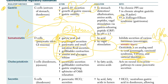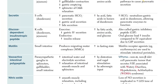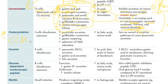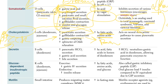CCK - cholecystokinin - comes from the I cells in the duodenum and jejunum. It increases pancreatic secretion, and most importantly increases gallbladder contraction. So if you have a gallstone and eat fatty foods, CCK stimulates your gallbladder and causes pain. CCK is increased by fatty acids and amino acids.